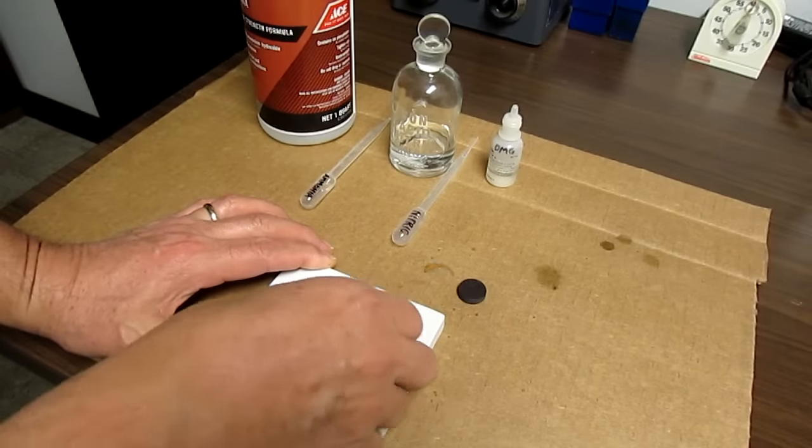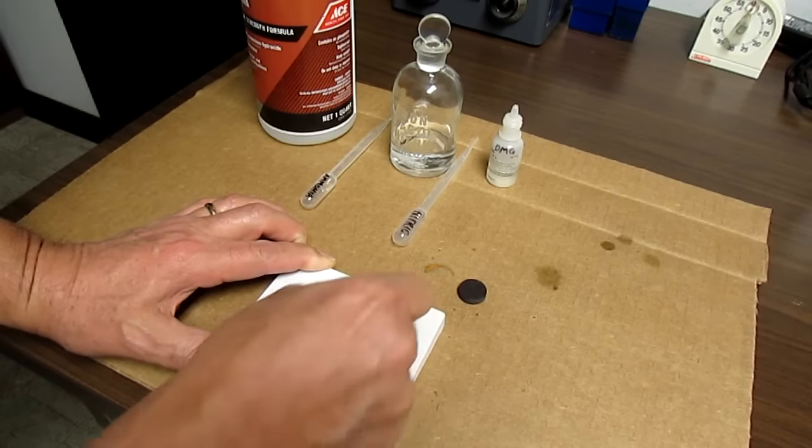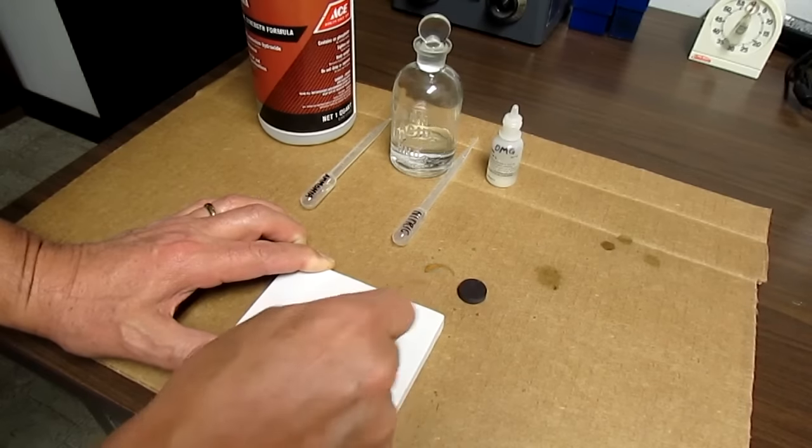To start the experiment I'm going to go ahead and rub a piece of the nickel on the bottom of a spot plate here to make a little streak.